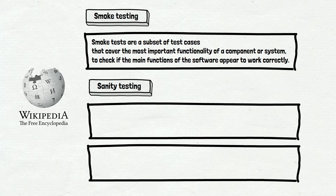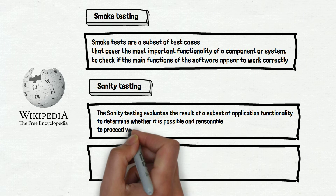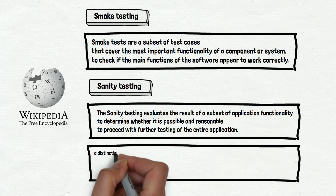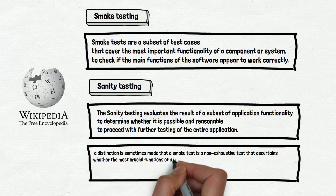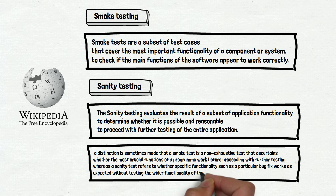Let's check what Wikipedia says about sanity testing. Sanity testing evaluates the result of a subset of application functionality to determine whether it is possible and reasonable to proceed with further testing of the entire application. It is a lot of fancy words, but it is nearly the same as smoke testing. There is a clarification in Wikipedia: a distinction is sometimes made that a smoke test is a non-exhaustive test that ascertains whether the most crucial functions of a program work before proceeding, whereas a sanity test refers to whether specific functionality, such as a particular bug fix, works as expected without testing the wider functionality. You can pause the video and read this one more time — it still confuses us and everybody else. So we are going to share our thoughts in a practical example.